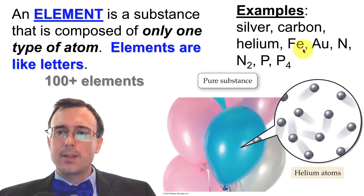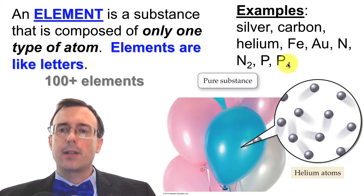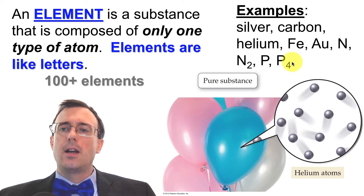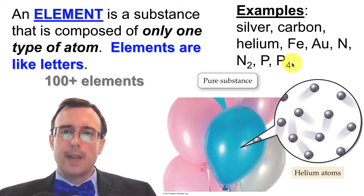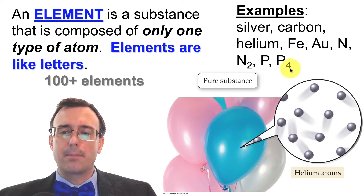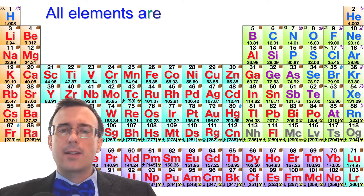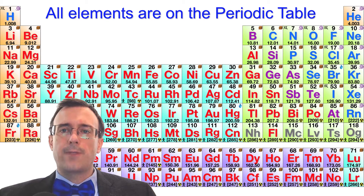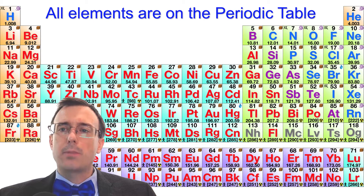Notice also that an element's symbol might just look like a single letter, or it might have a number in it, such as N2 or P4. The number indicates the number of that type of atom that are bonded together. However, they're still elements because they still contain all the same type of atom. All elements are found on the periodic table — if it's not on the periodic table, it's not an element.